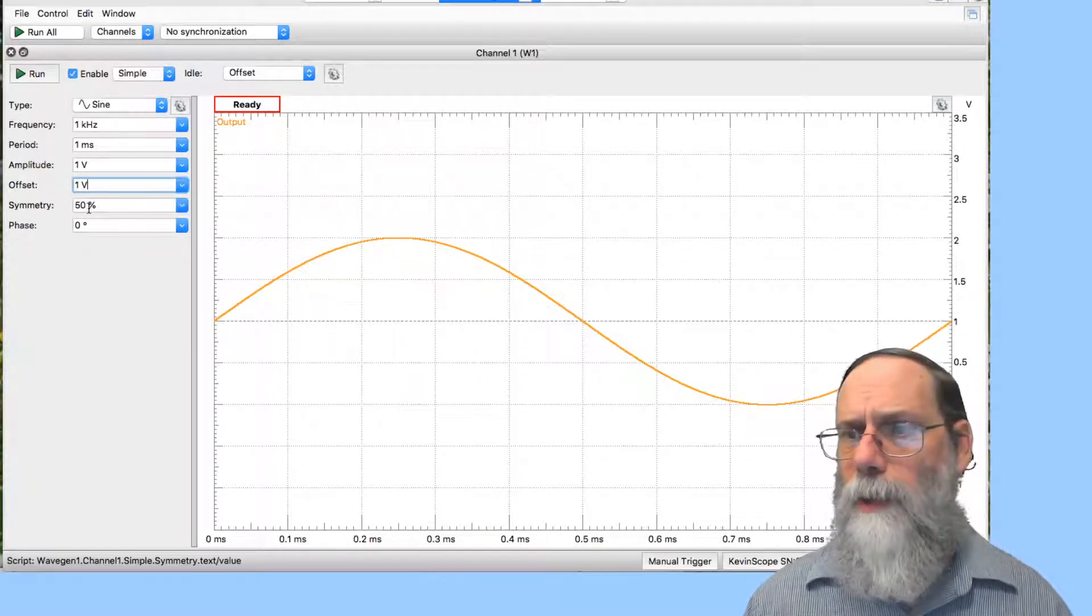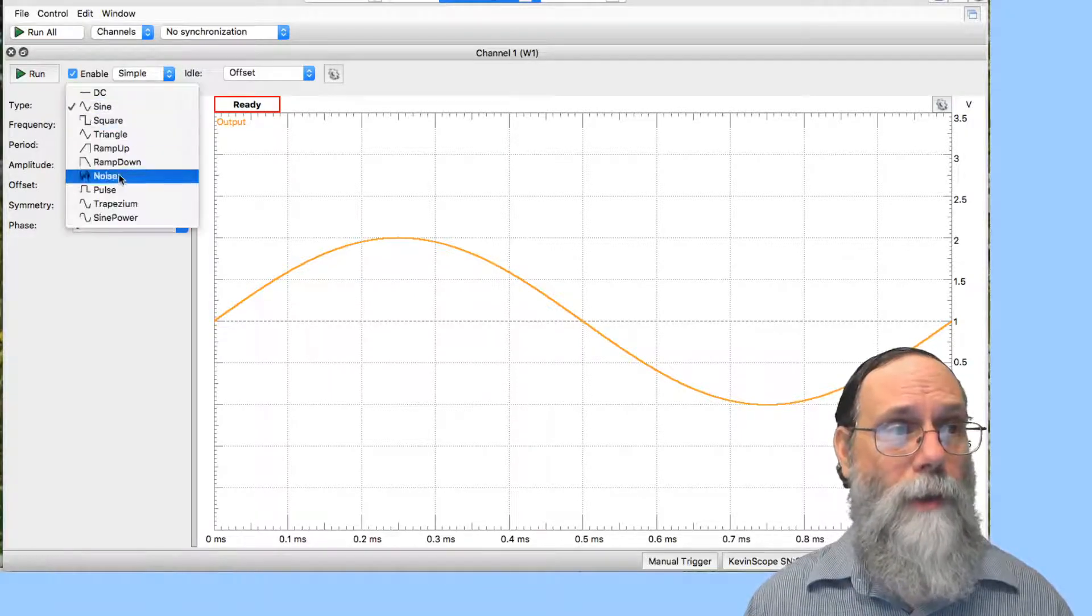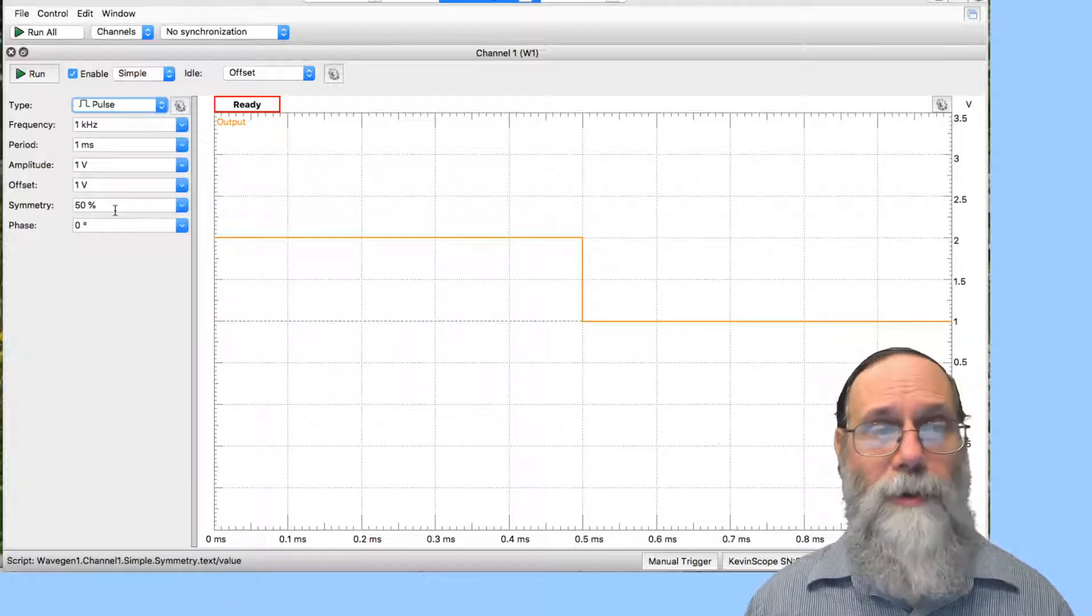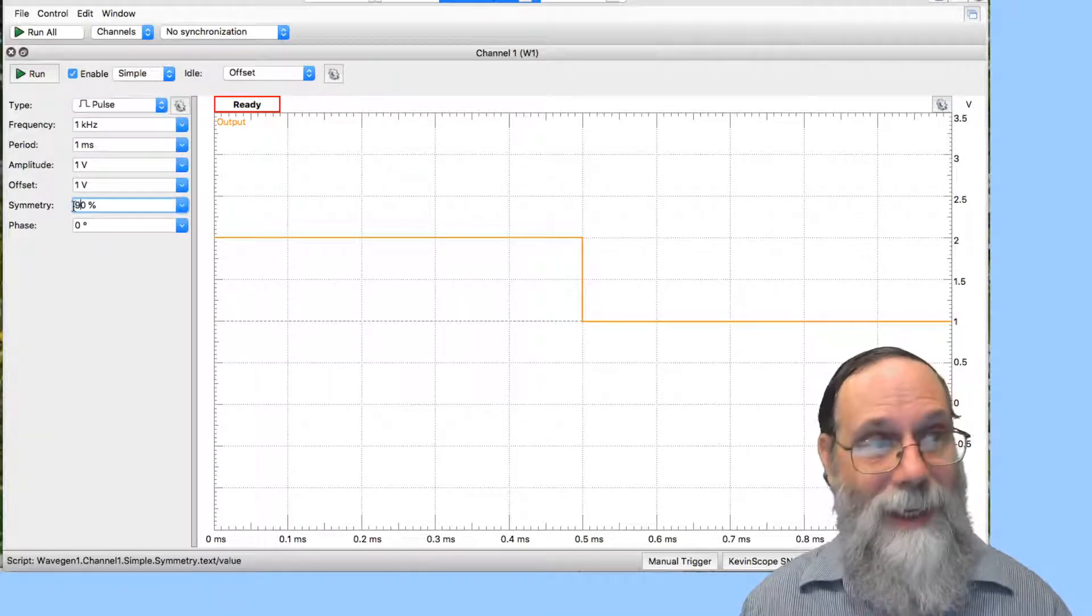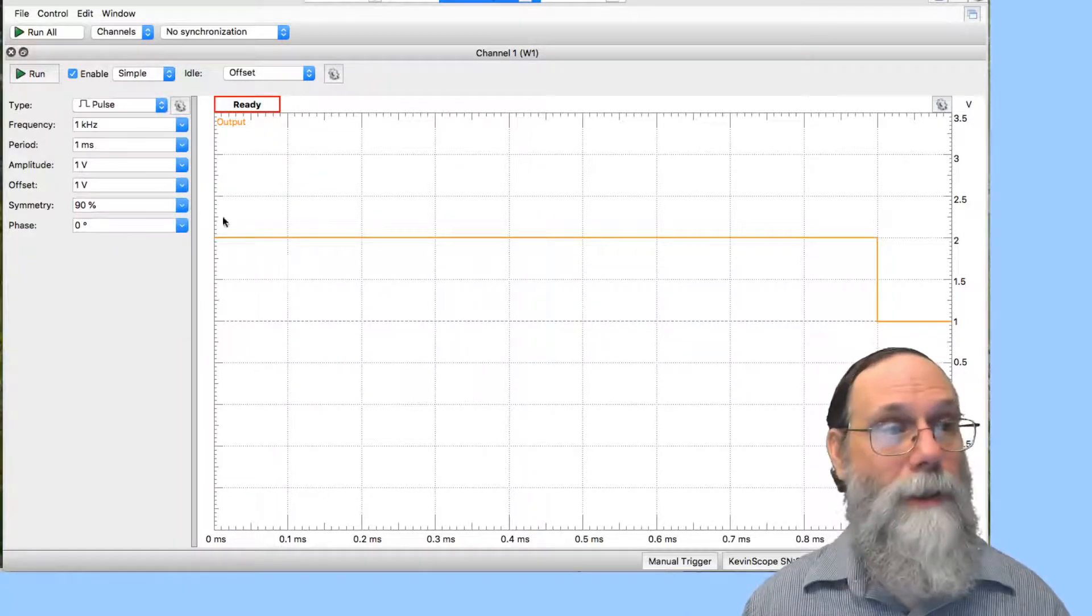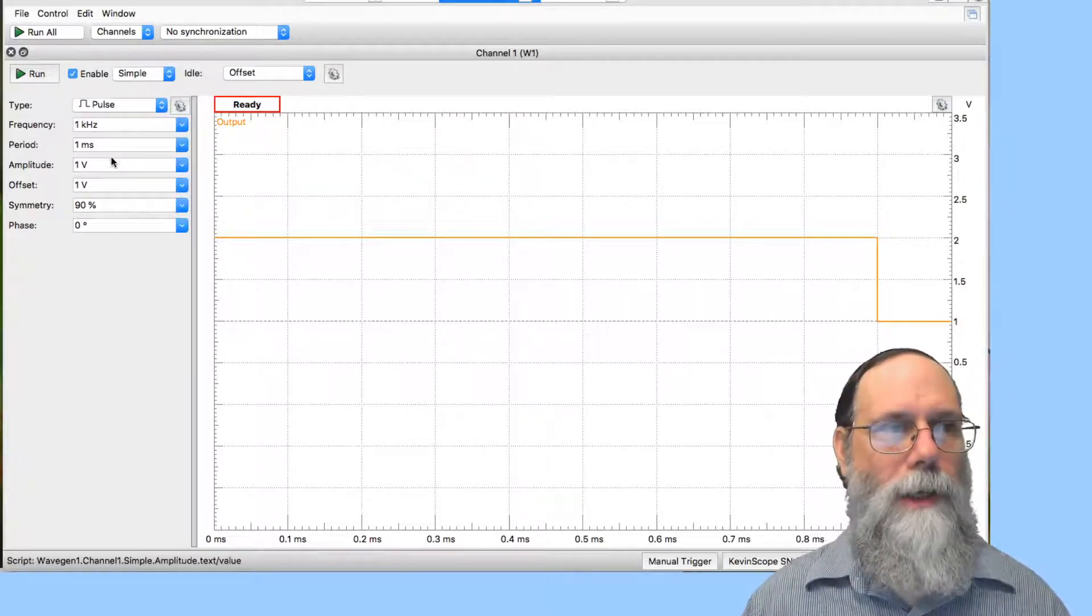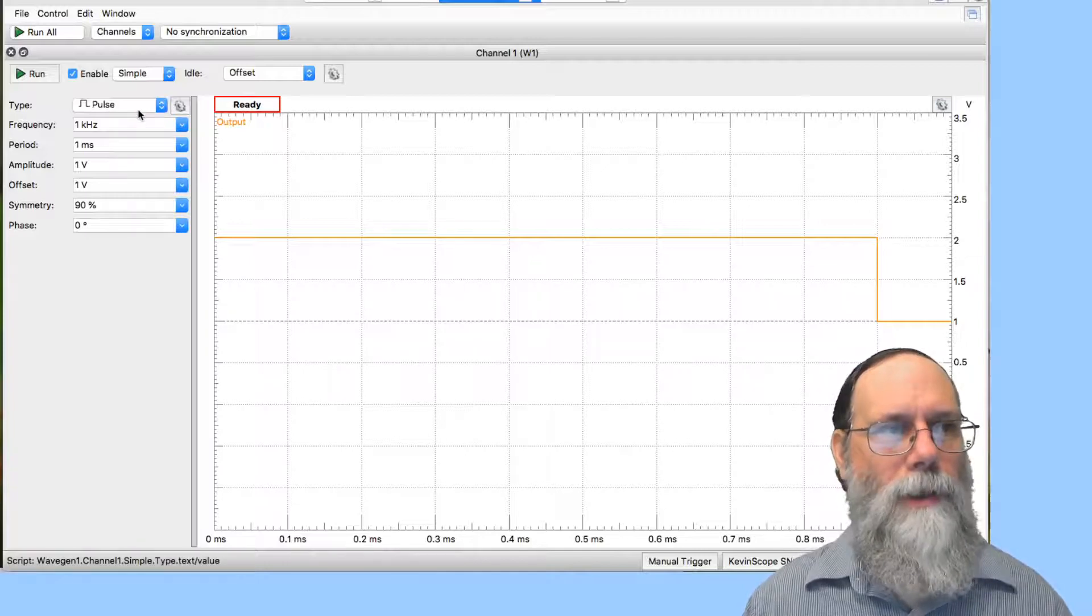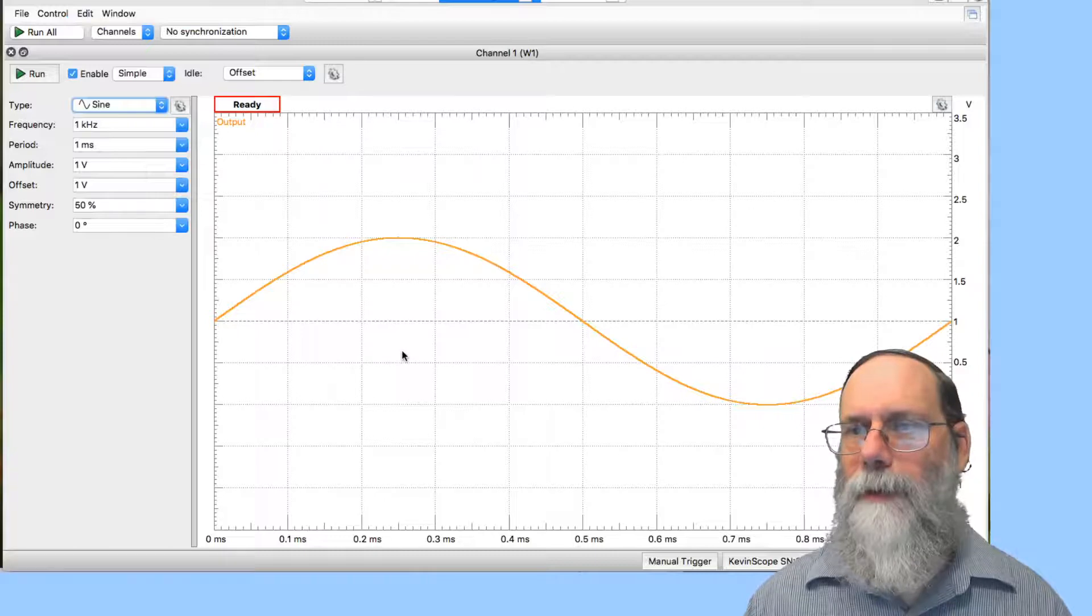Symmetry here, that's not something you usually play with much on the sine wave, but for some of the other waveforms like the pulse, the symmetry here is the duty cycle, so how much of the time it's high. So if I went to a 90 percent duty cycle there, it'd be high for 90 percent of the period. Phase is where it is at time zero, and again, we usually won't have any need to play with that. So let's go back to sine wave and back to 50 percent.